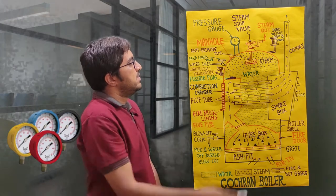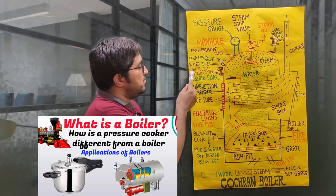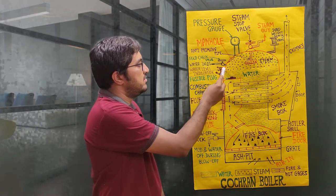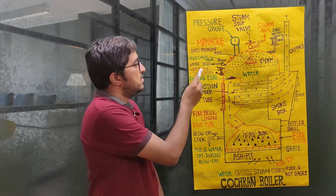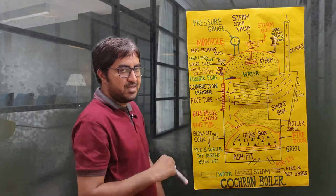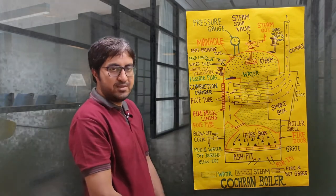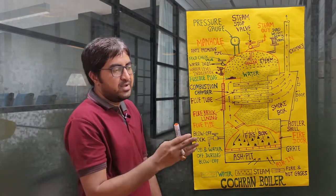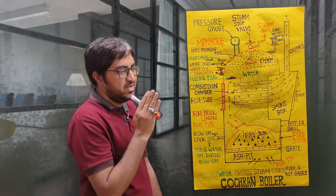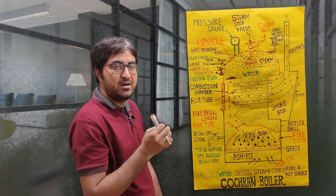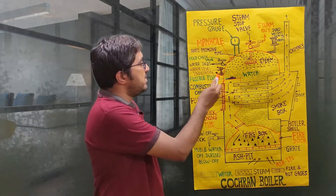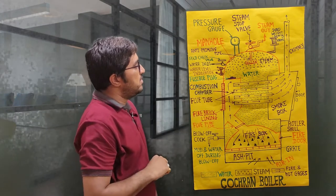The first mounting is the pressure gauge, whose function is to measure the pressure. The water level indicator has one end connected to the water side and the other end connected to the steam side, indicating the level of water inside the shell. As discussed in a previous lecture, boilers use two types of equipment: mountings — parts necessarily required to operate the boiler — and accessories, which are not necessarily required but increase the efficiency when used.